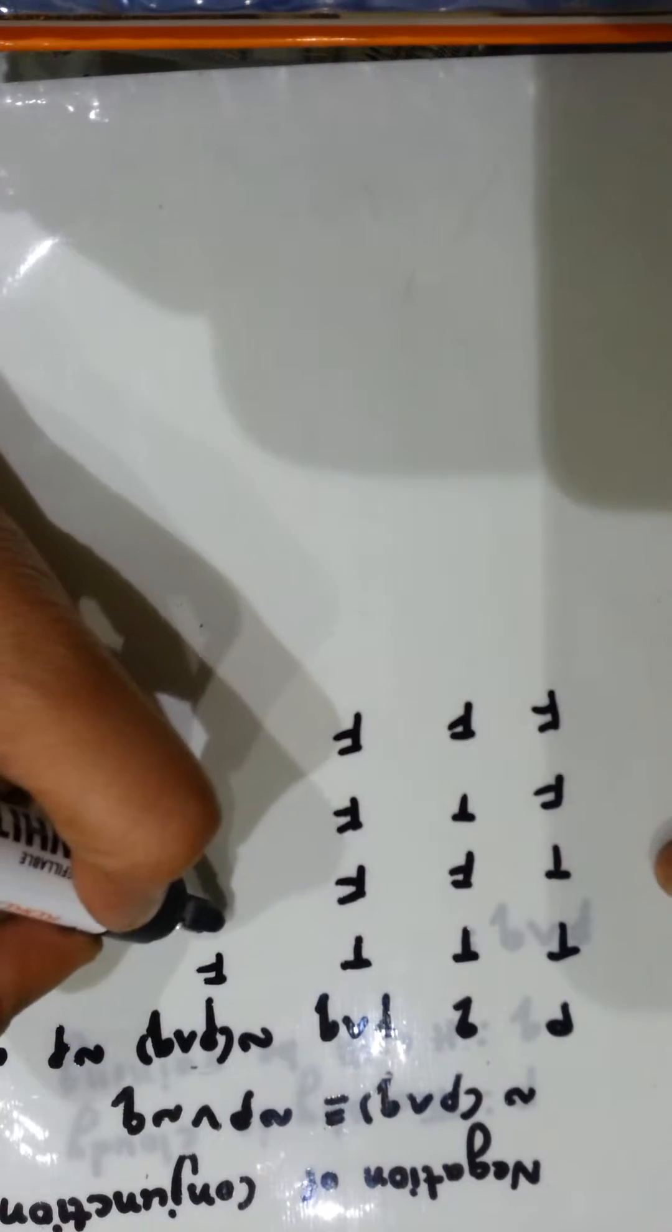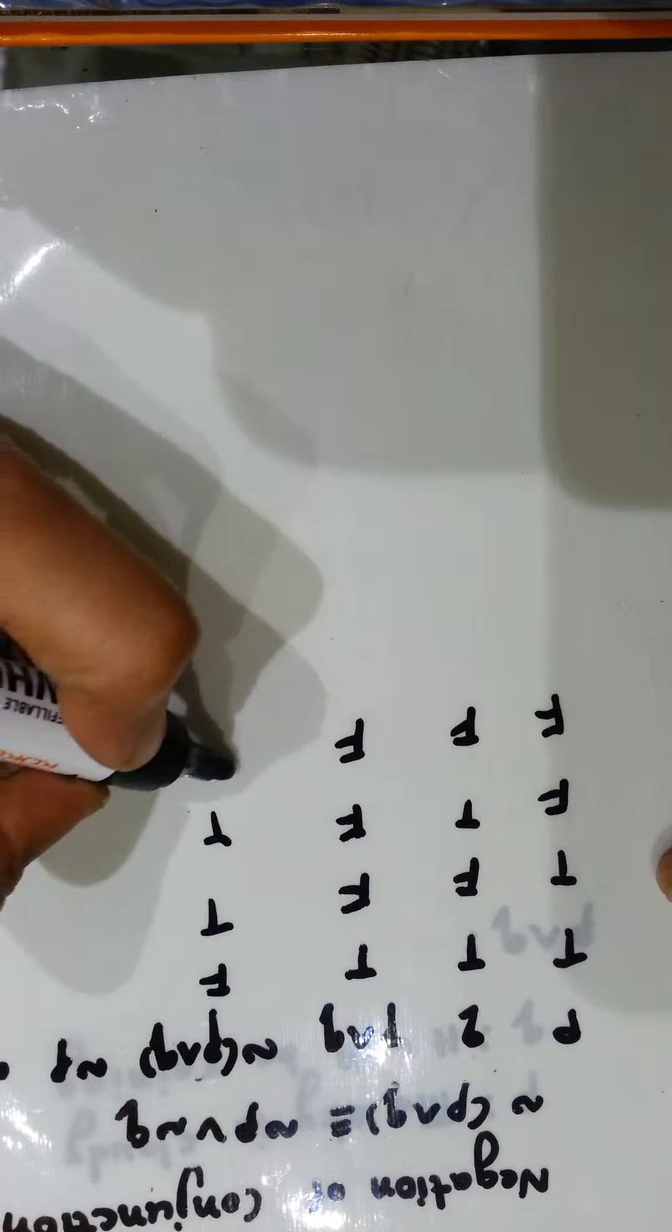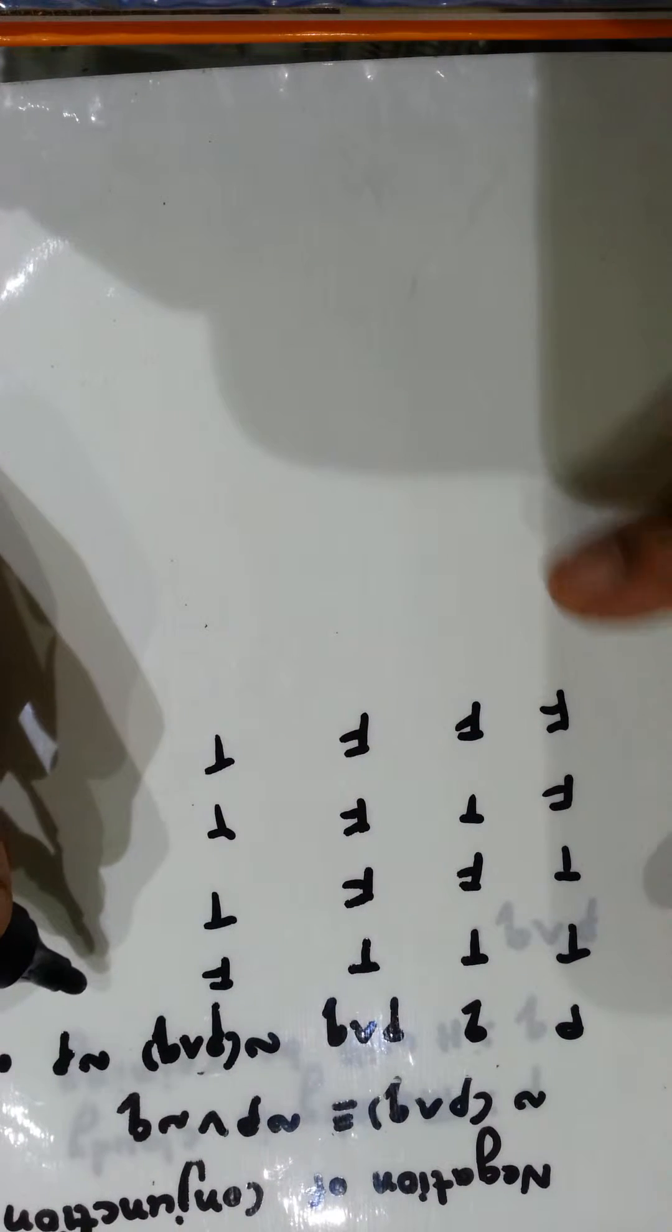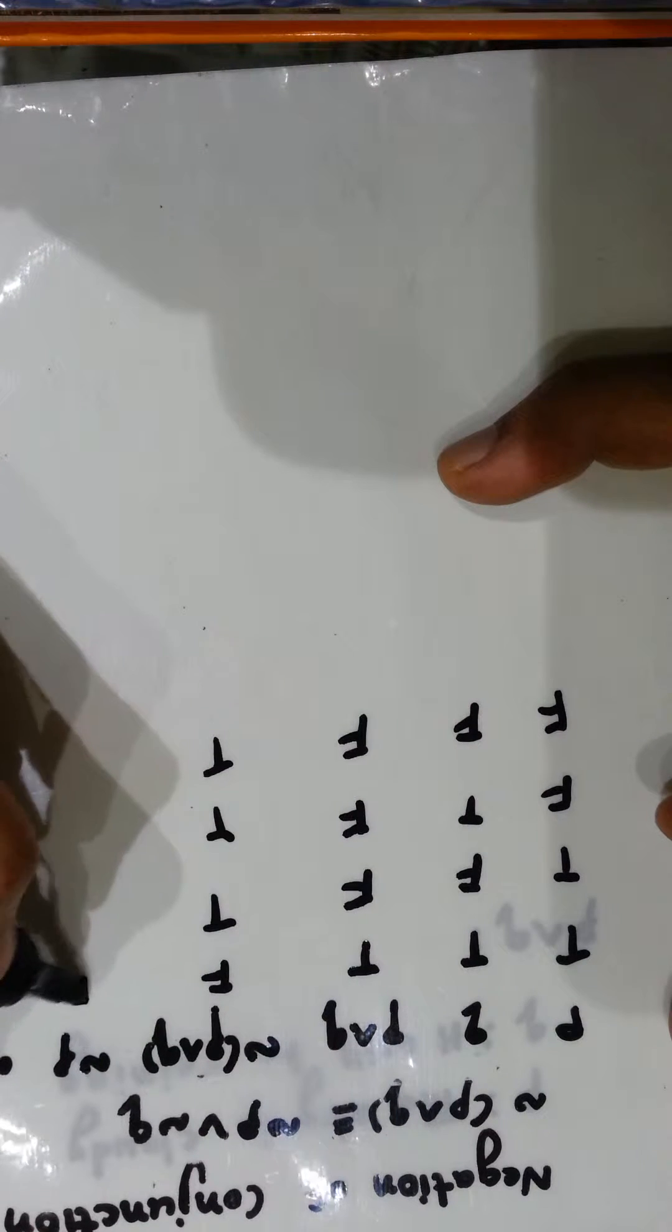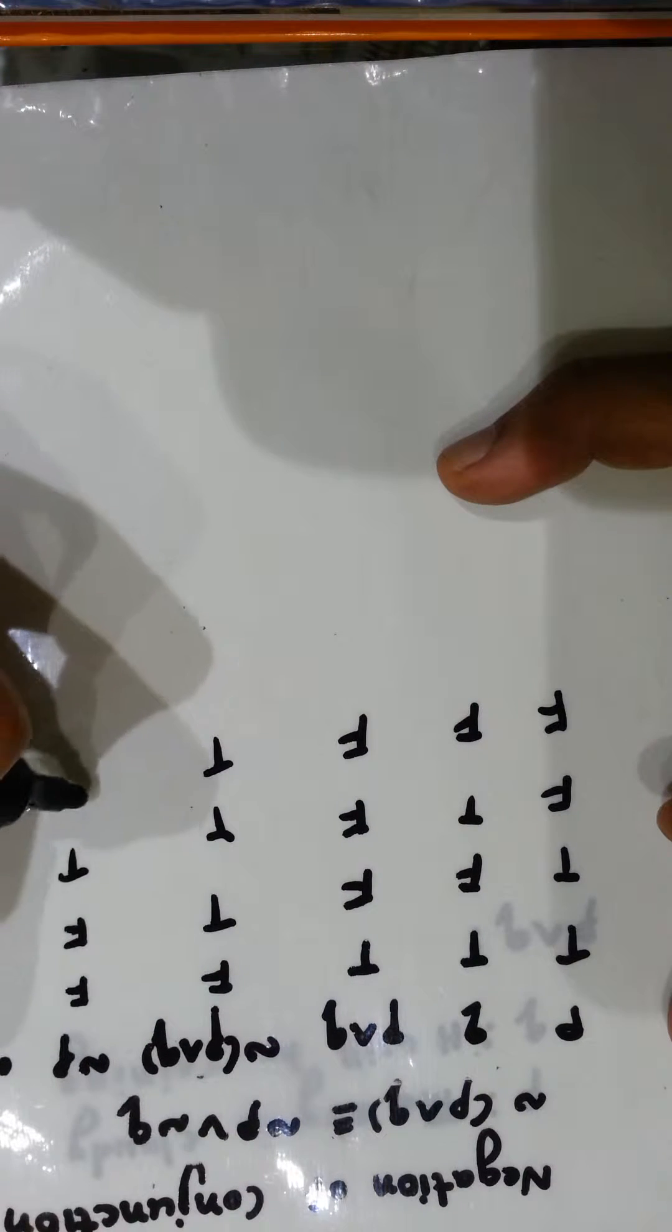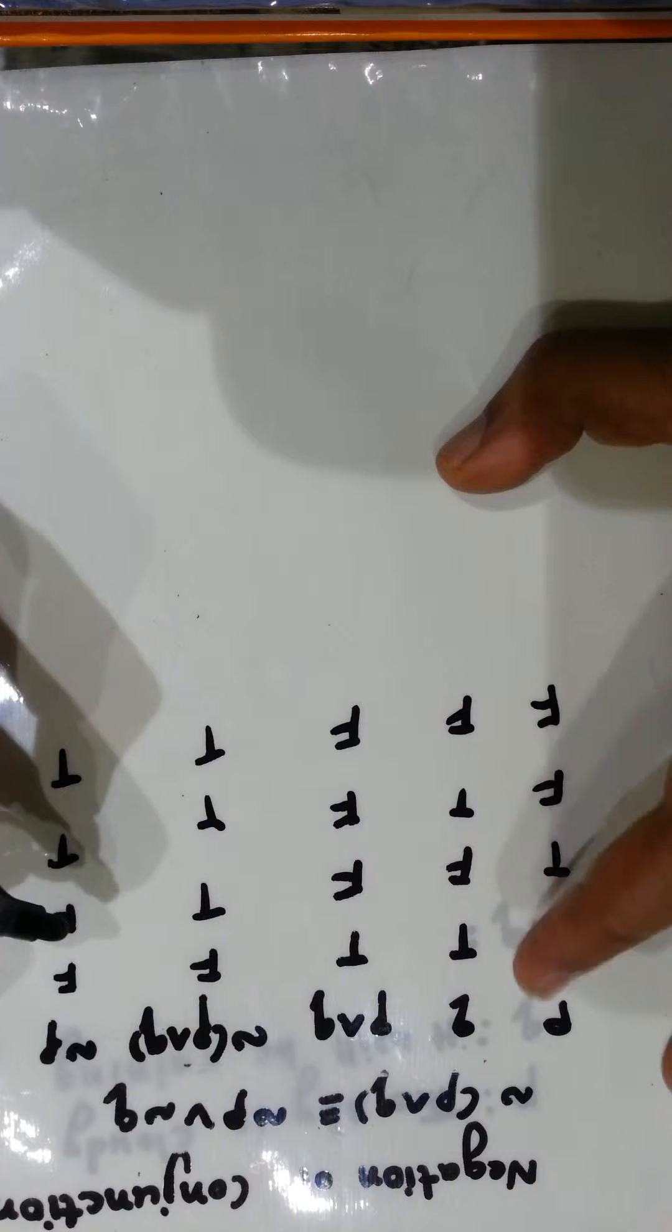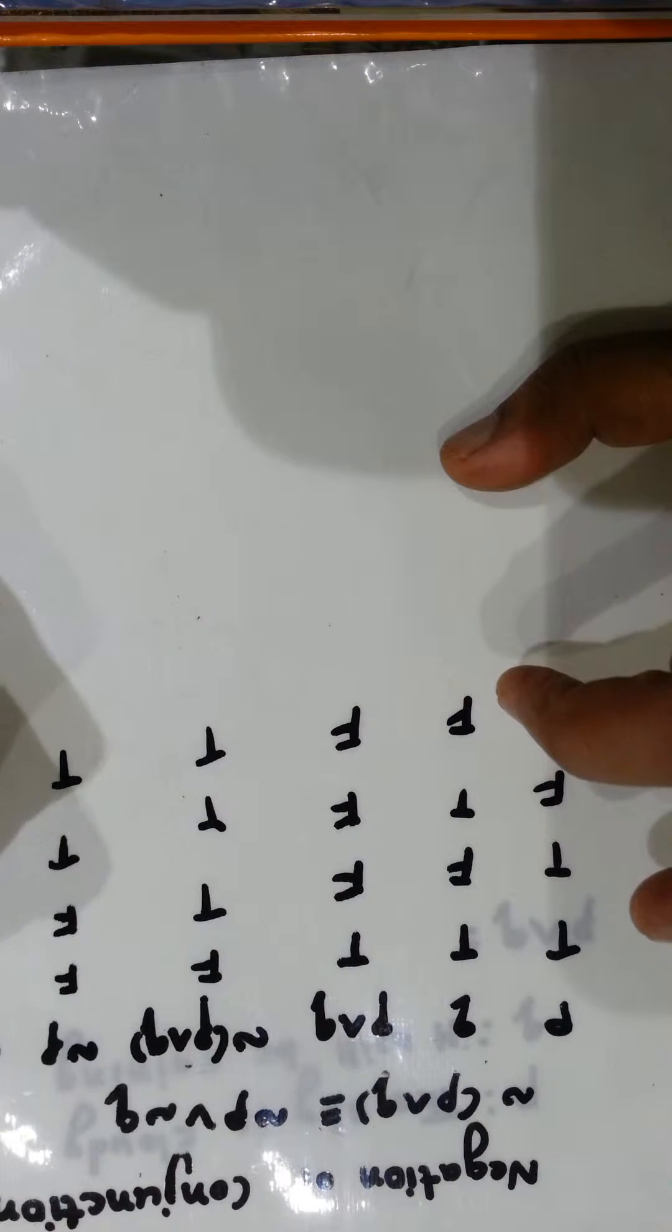Negation of this: if T then F, F then T, T and T. Negation of P—here TT, FF, so negation will be FF, TT. Negation of Q—so TF, TF will write FT, FT.